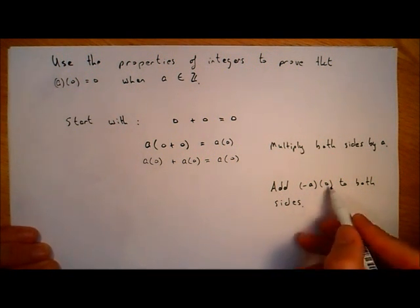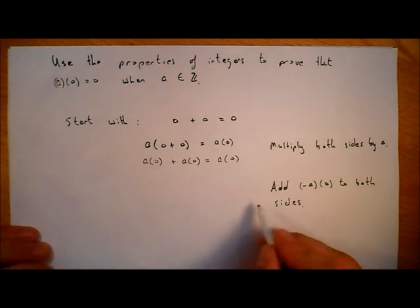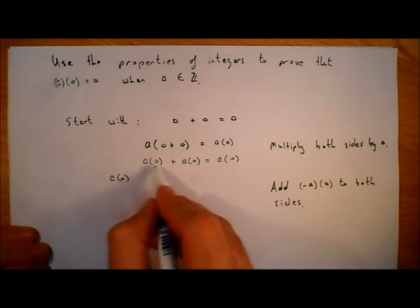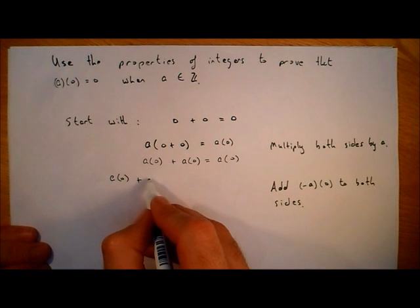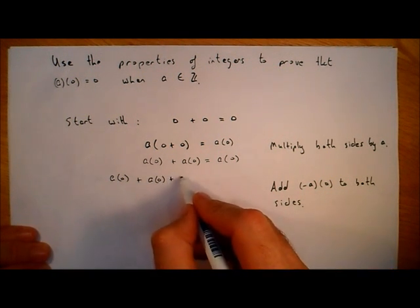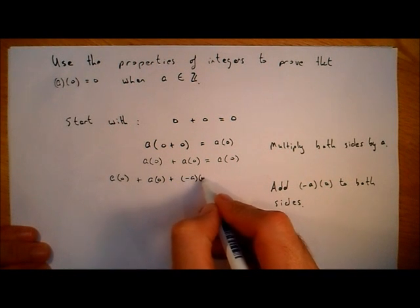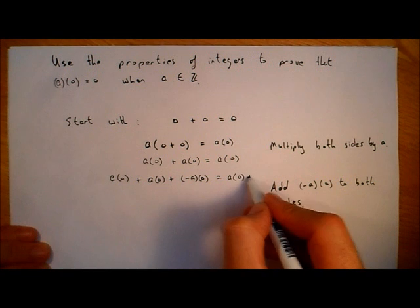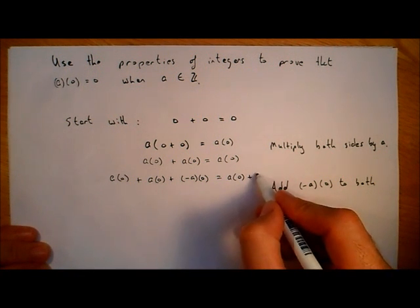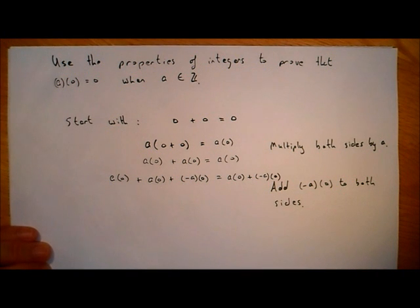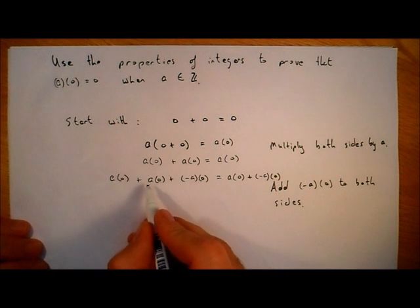The second step is to add minus a times zero to both sides. So on the left we have a times zero plus a times zero, and we add minus a times zero. On the right we have a times zero, and we also add minus a times zero to that side.